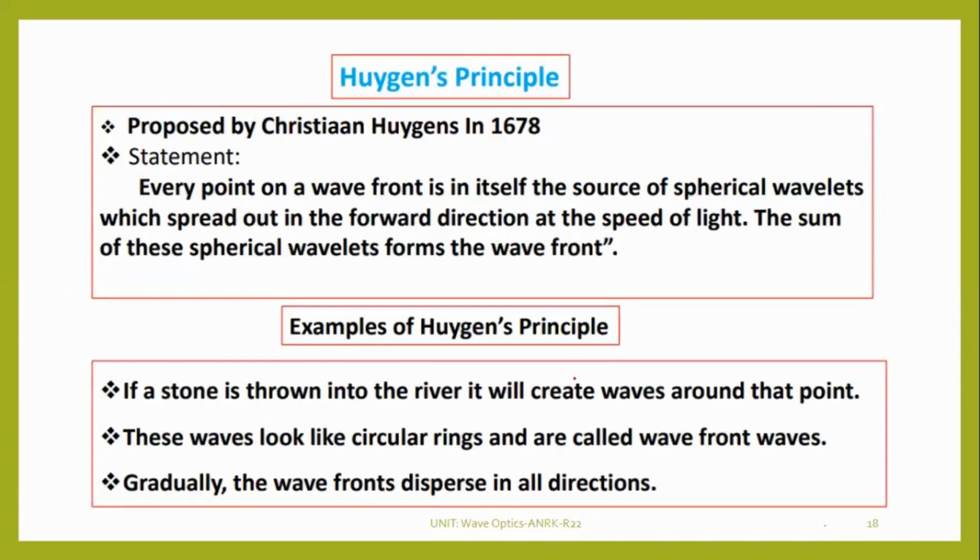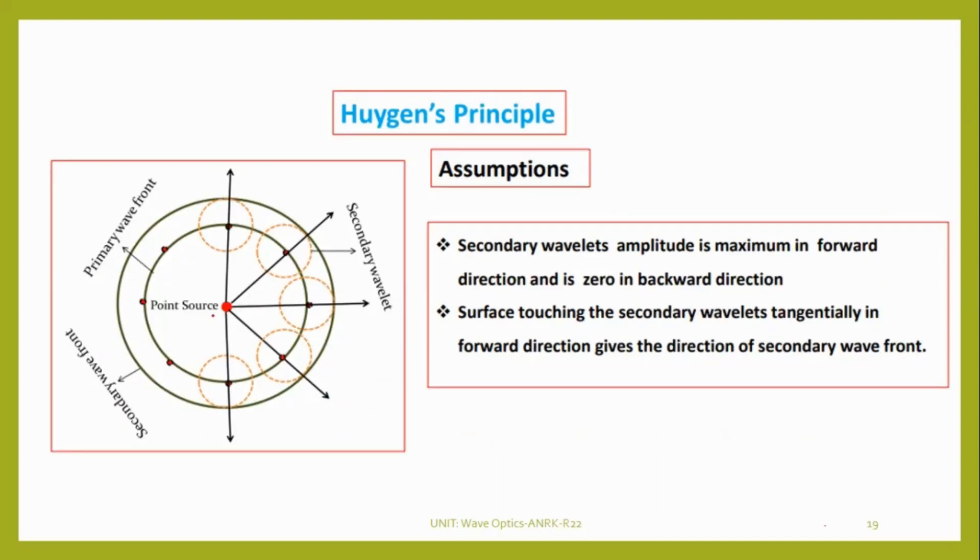Then Huygens principle. Every point on the wavefront is in itself the source of spherical wavelets which spread out in forward direction at the speed of light. The sum of the spherical wavefronts form the wavefront. Light is traveling in directions by forming wavelets whenever it is moving.